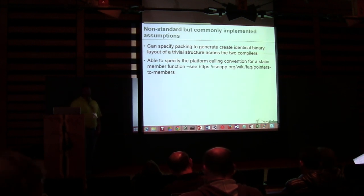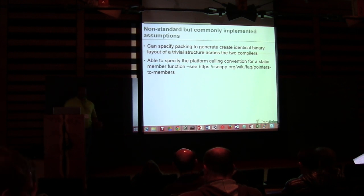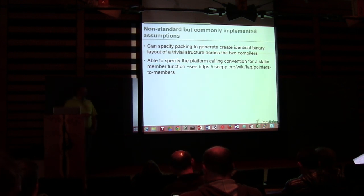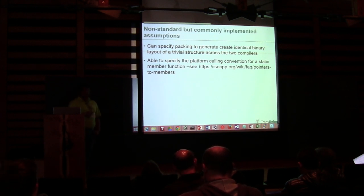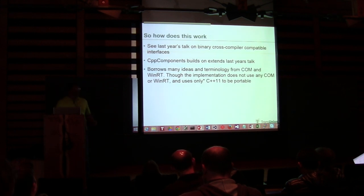Audience suggestion: I'm thinking of a Clang library that would generate it for you. Response: Clang would be nice. Like I said, we've got something to output to, and I bet if Clang could do that it would make it nicer. But there are no further questions, so let's move on.